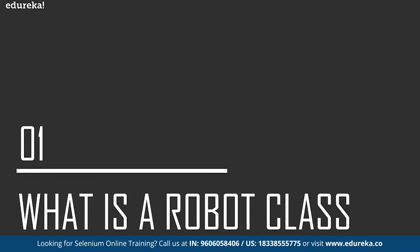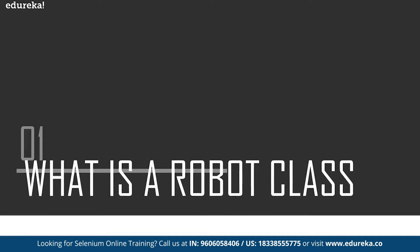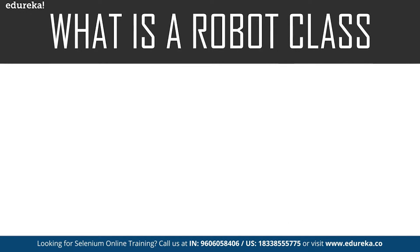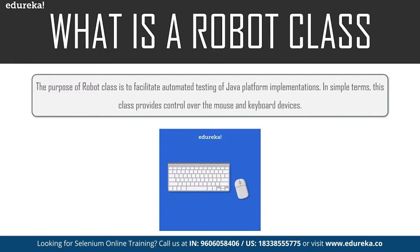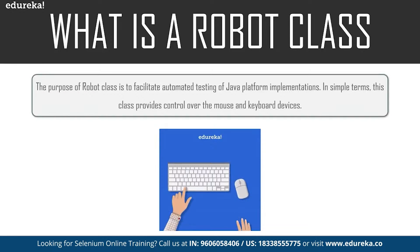Time plays a major role while testing, and we need to make sure we complete the desired task within a specific time. A Robot class is used to generate native system input events for the purpose of test automation, self-running demos, and other applications where control of mouse and keyboard is needed. The primary purpose of this Robot class is to facilitate automation testing for the Java platform. In simple terms, this class provides control over the mouse and keyboard devices, and it can handle pop-ups during execution.